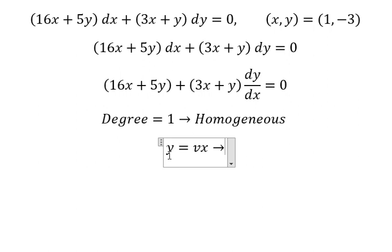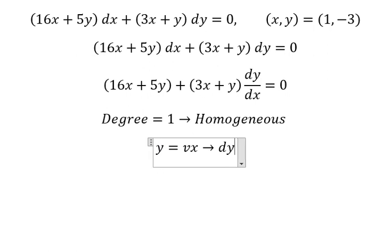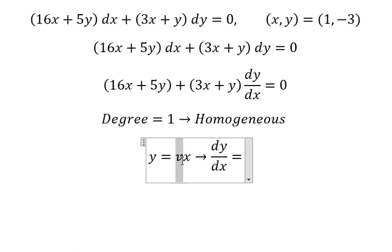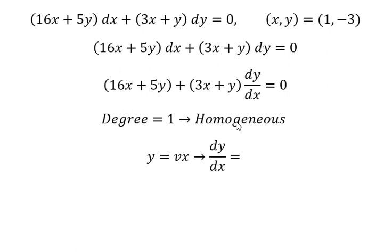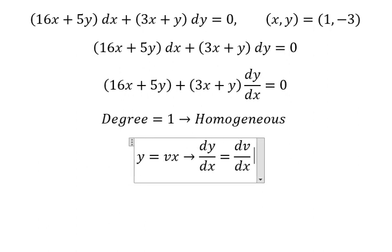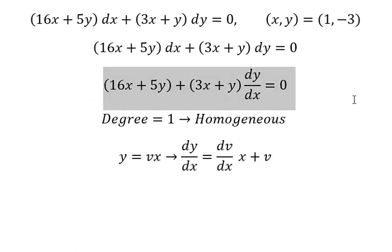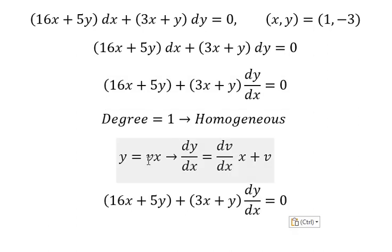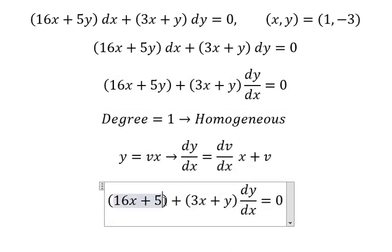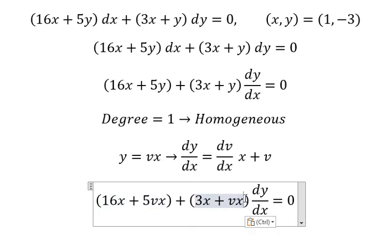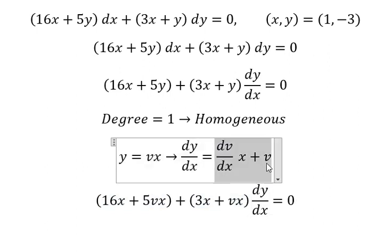We do the first derivative for both sides. The first derivative of y gives us dy over dx. For the first derivative of vx, we get dv over dx multiplied by x, plus the first derivative of x which is one, giving us v.